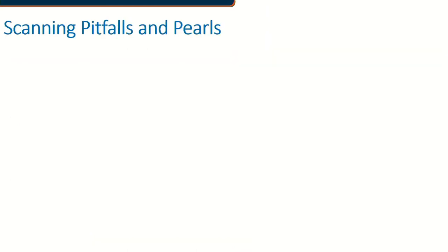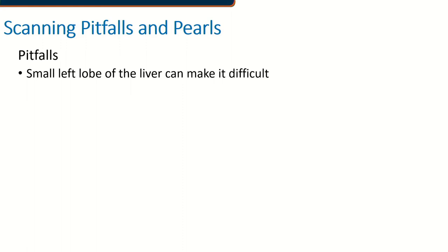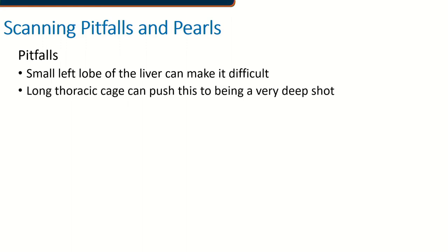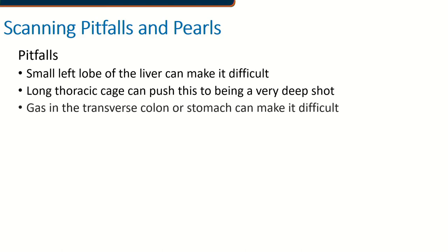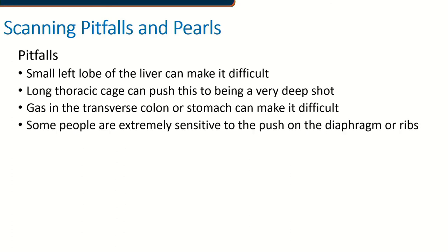Let's think about some scanning pitfalls and pearls. A small left lobe of the liver can make it difficult to scan this image because it allows the stomach or transverse colon to take up that space, giving you air artifacts that make this a difficult scan. Having a very narrow, long thoracic cage can push this into a very deep shot, and when you go deeper you lose resolution — so deeper structures like the left atrium can be difficult to make out. Gas in the transverse colon or stomach, even with a good liver lobe, can get in your way and you may need to manipulate your patient.